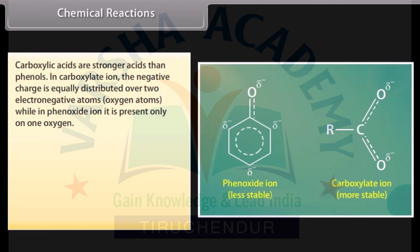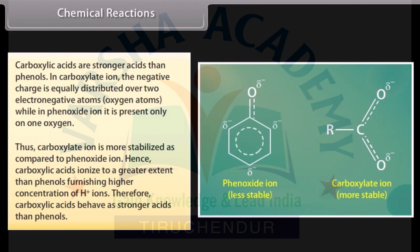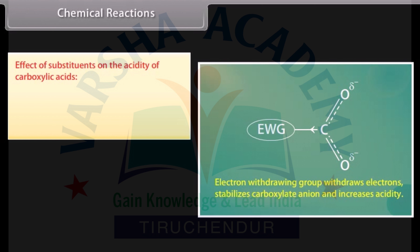Carboxylic acids are stronger acids than phenols. In the carboxylate ion, the negative charge is equally distributed over two electronegative oxygen atoms, while in phenoxide ion, it is present only on one oxygen. Thus, the carboxylate ion is more stabilized as compared to the phenoxide ion. Hence, carboxylic acids ionize to a greater extent than phenols, furnishing a higher concentration of hydrogen ions. Therefore, carboxylic acids behave as stronger acids than phenols.